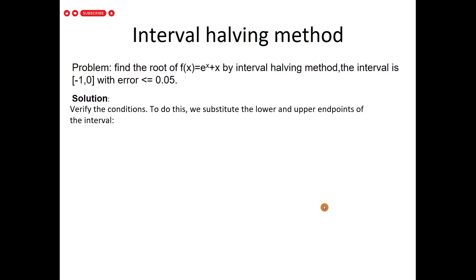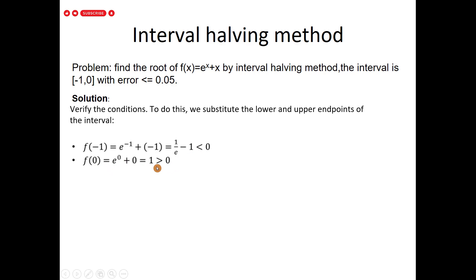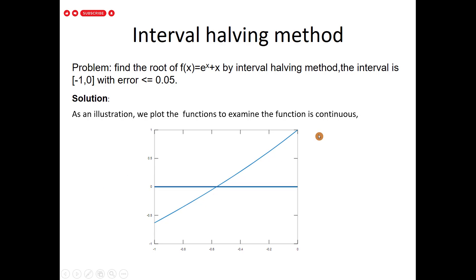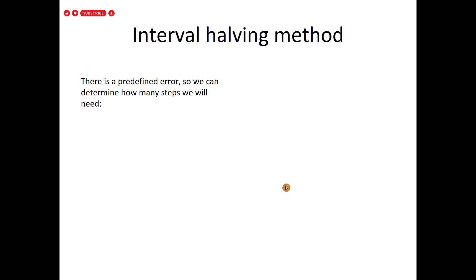Let us verify the conditions. First, we substitute the endpoint values: f(-1) = 1/e - 1 ≈ -0.63, which is less than zero. And f(0) = 1, which is greater than zero. So the function has different signs at the endpoints. We also plot the function to confirm it is continuous within the interval. Both conditions are satisfied.